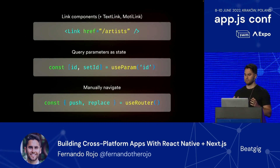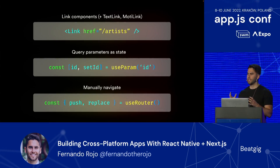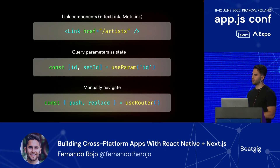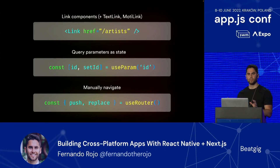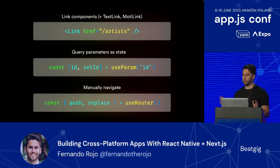The API provides three things. First, a set of link components: a text link, a Moti link, and a basic link. Second, a useParam hook, which replaces useRoute from React Navigation — it looks just like useState, but lets you use query parameters on web and screen parameters on native to update state. And finally, a useRouter hook, which lets you push and replace screens with URLs. What's important to note about Solito is that it doesn't concern itself with how you render your screens. It views your screens as your app's primitives, but it's up to your app and website to render these however you want. You can use tabs, stacks, drawers, a modal — whatever you want. You're not constrained at all.